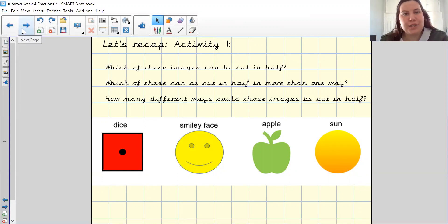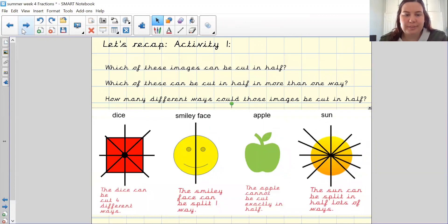I am now going to go through the answers on the next page. So as you can see, we have done some lines to represent where you can half the shape. The dice is a square. The dice can be cut into four different ways. As we did previously, it can go down the middle, it can go vertically, or it can go diagonally from corner to corner.